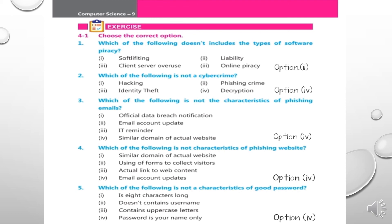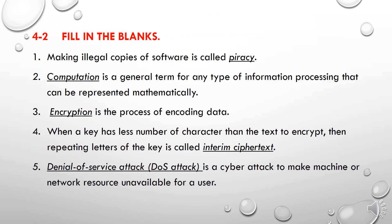Fifth: Which of the following is not a characteristic of a good password? Options: 8 characters long, doesn't contain username, contains uppercase letters, or password is your name only. The correct option is 'password is your name only.' Fill in the blanks: Making illegal copies of software is called piracy. A general term for any type of information processing that can be represented mathematically is computation. The process of encoding data is encryption. When a key has fewer characters than the text to encrypt and the letters of the key are repeated, this is called interim ciphertext. A cyber attack to make a machine or network resource unavailable for a user is called a DOS — Denial of Service attack.